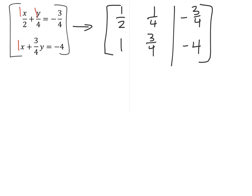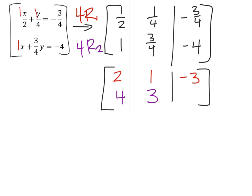For example, in row one, if I multiply this by four, notice what this does is it gets rid of all the fractions, and that gives us this new row one in red. Likewise, with row two, if I multiply these by four, then it gets rid of that three-fourths as well. Four times one is the four, four times three-fourths is three, four times negative four is negative sixteen.